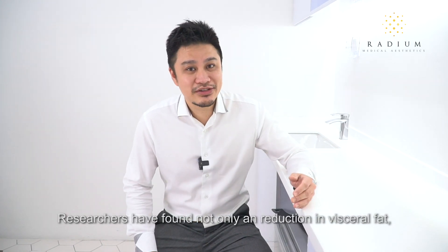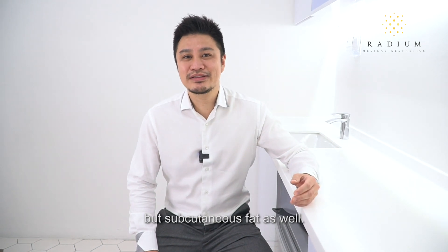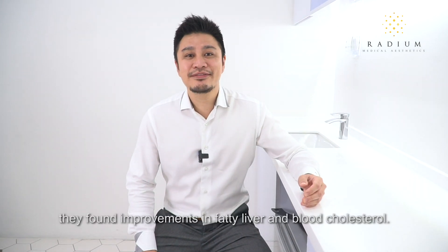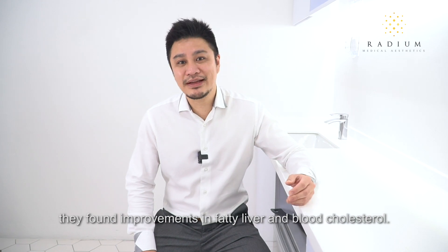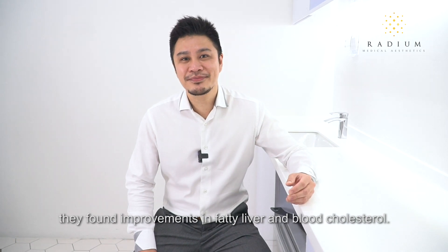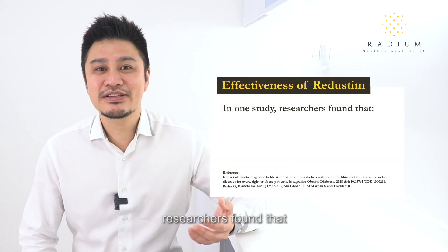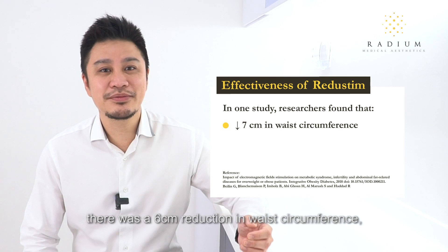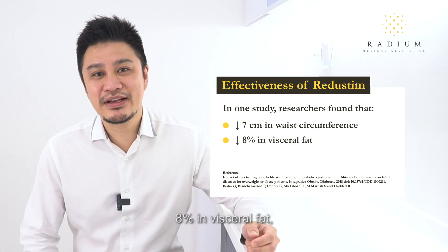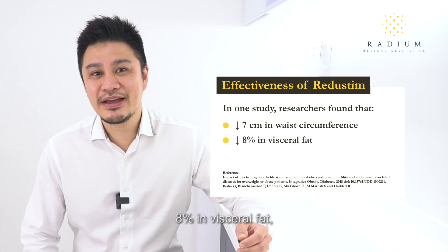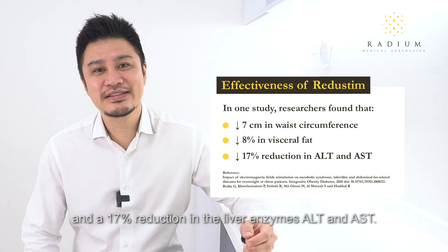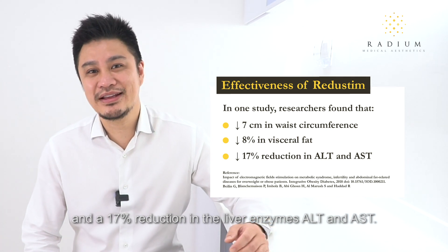Researchers have found not only a reduction in visceral fat but subcutaneous fat as well. In addition, they found improvements in fatty liver and blood cholesterol. In one such study, researchers found a 6 cm reduction in waist circumference, an 8% reduction in visceral fat, and a 17% reduction in the liver enzymes AST and ALT.